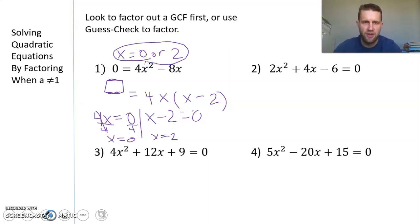So my solutions to number 1 are x = 0 or positive 2. To check these, put the expression 4x² - 8x into Desmos, and your parabola should cross x-values at 0 and 2.